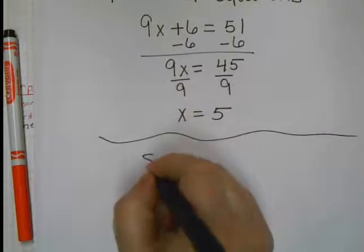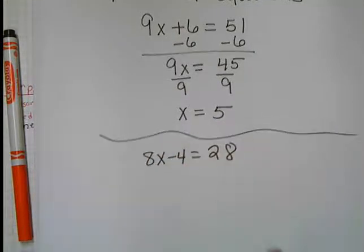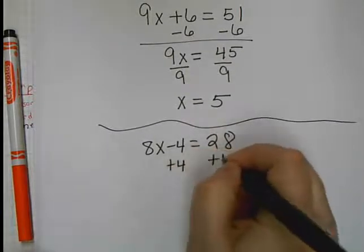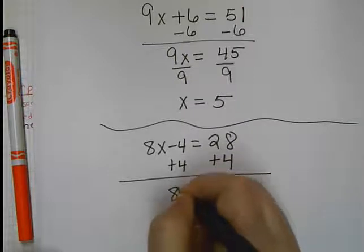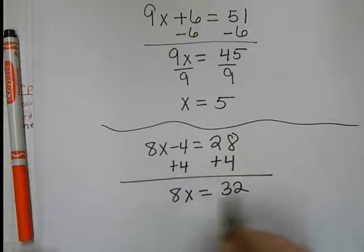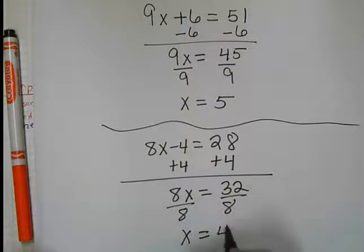All right, so let's look at this one. Working this out, I'm going to add 4 to both sides. 8X equals 32. I'm going to divide by 8 and X equals 4.